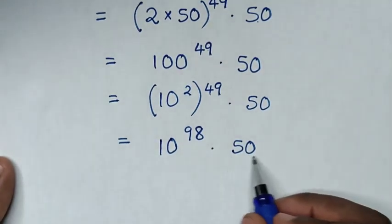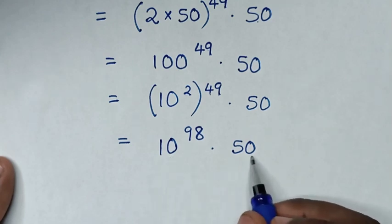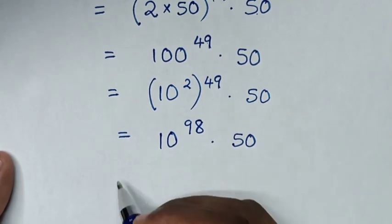Now, for this 50, to have same base of 10, 50 is same as 10 times 5. So it will be equal to, this 10 power of 98 times,